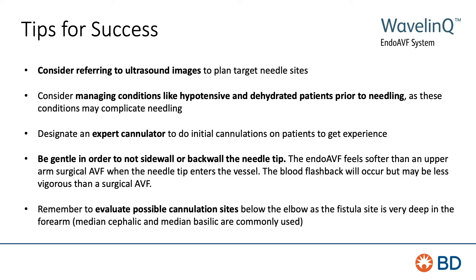Some additional things to consider for a successful endo-AVF cannulation: refer to ultrasound images to help plan your target needle sites. Try to manage conditions like hypotension and dehydration prior to needling to avoid related complications. Designate an expert cannulator for initial cannulations of new endo-AVFs. Be gentle not to sidewall or backwall the needle tip. The endo-AVF outflow vessels feel softer than an upper arm surgical AVF when the needle tip enters the vessel. Blood flashback will occur but may be less vigorous than with a surgical AVF. Remember to evaluate all possible cannulation sites, including those below the elbow, as the fistula site is very deep in the forearm.